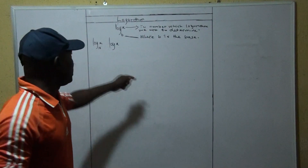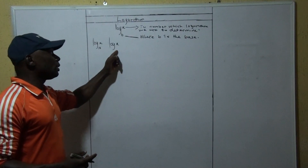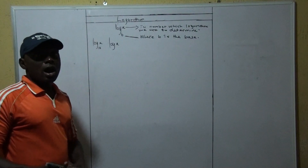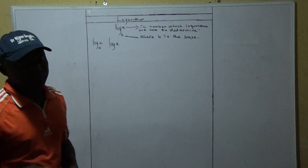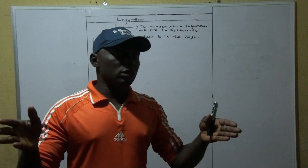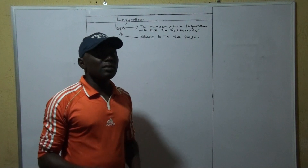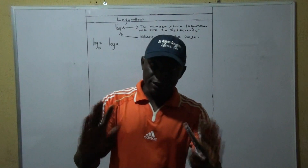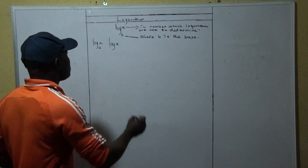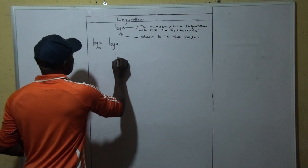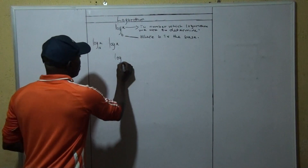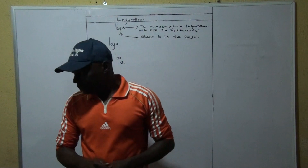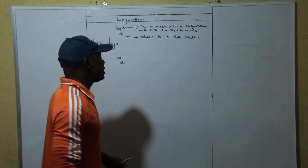Apart from base 10 — which sometimes is not normally specified — every other logarithm base must be specified. So if we are looking at base 2, we must indicate that the logarithm is base 2. If it is base 4, the base must be indicated. That is the first thing I want us to know.